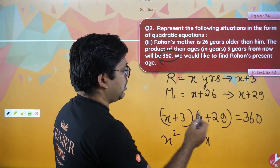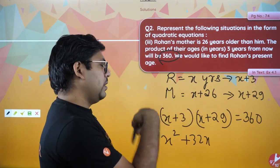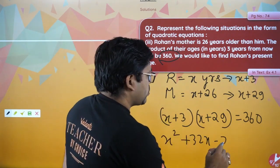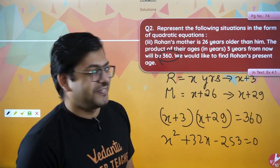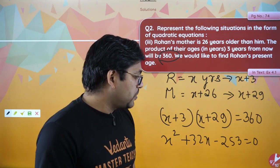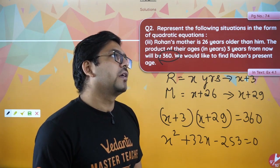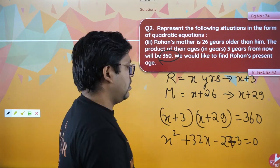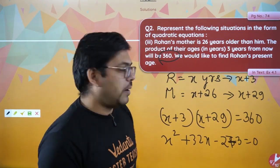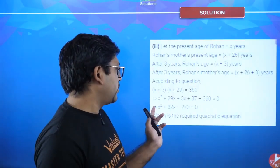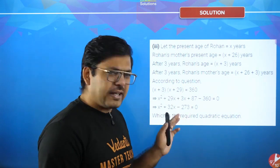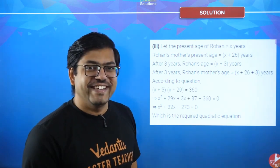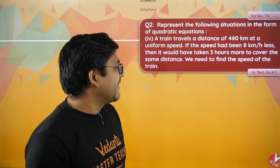Multiplying out (x + 3)(x + 29): x² + 32x + 87 minus 360 equals zero, giving x² + 32x − 273 = 0. That's the quadratic equation. If you want, you can solve it further using middle term splitting in the same way. The answer will come out directly.